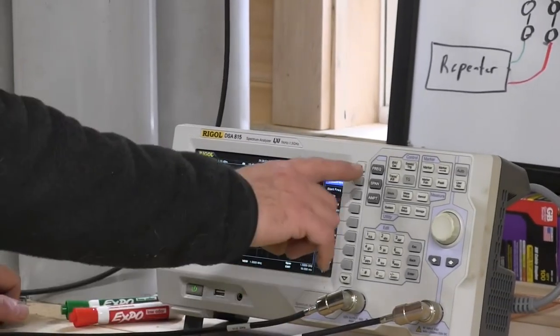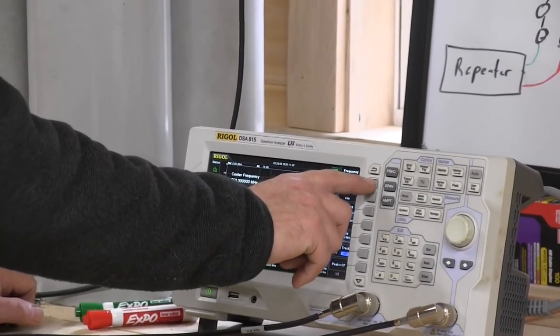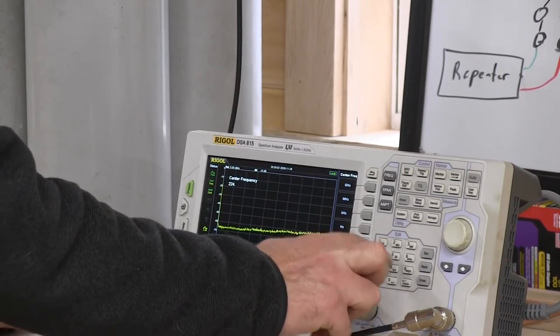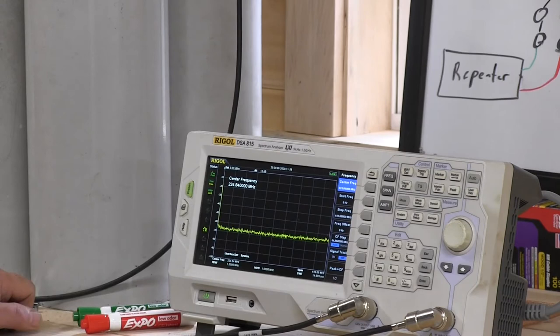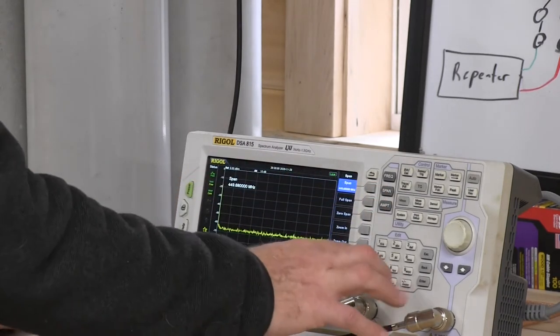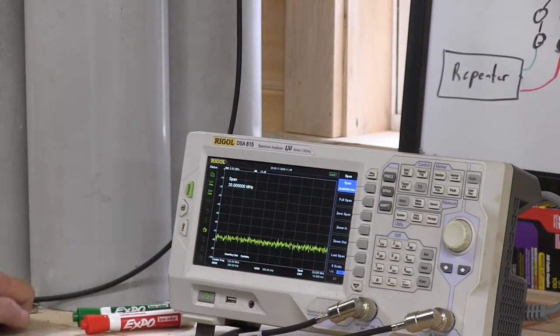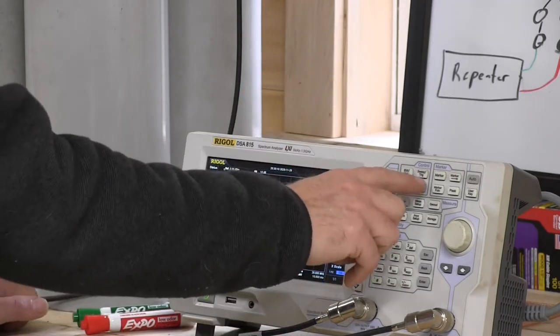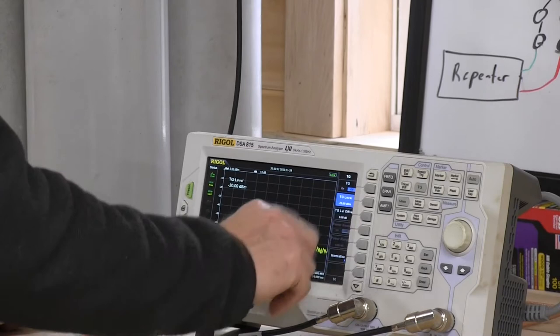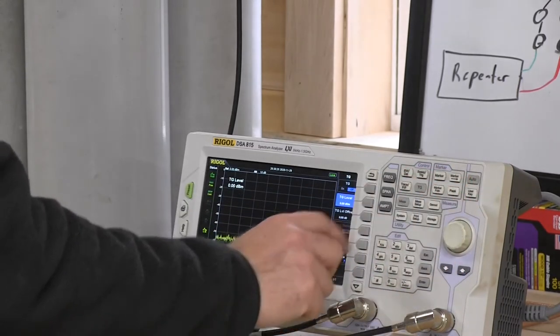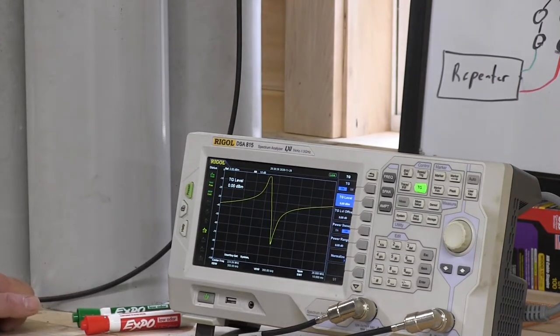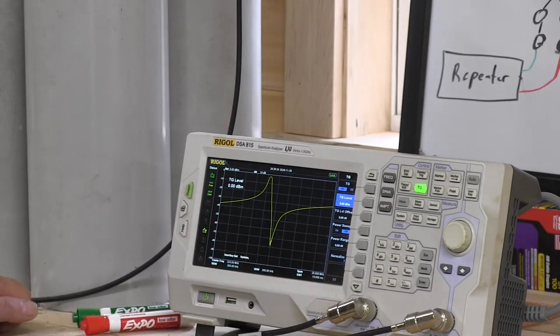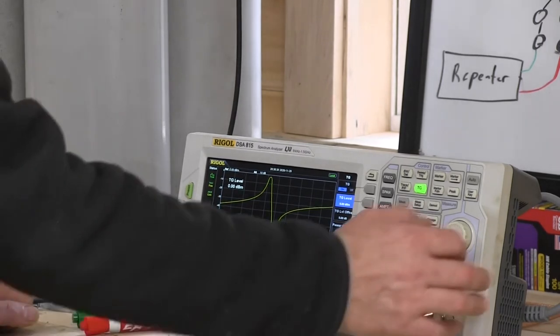The first thing we're going to do is set up our frequency. We want to set our center frequency for our repeater frequency, 224.840 megahertz. Now we want to do a span and we're going to do about 20 megahertz. We'll tune this in as we go. So now we've got it set up to listen in the area that we're working in. We need to turn on the tracking generator. We're going to set the level to 0 dB for now and turn it on.